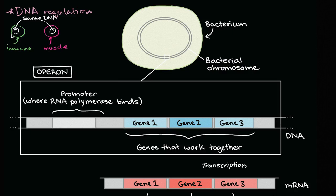It doesn't make sense - in order for them to even have different structures, they're going to have to produce different proteins. They're going to have different enzyme proteins inside of their cytoplasm. So DNA regulation, one way to think about it is: if they have the exact same genome, how do they regulate which of those genes are being transcribed and then translated, and which ones aren't?